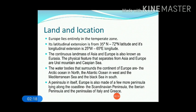Now, land and location — we will see the extension of Europe and the water bodies that surround Europe, as well as the latitudinal and longitudinal extensions. Europe lies entirely in the temperate zone. You are very much familiar with the terms temperate zone, torrid zone, and frigid zone. The temperate zone belongs to latitudes between about 40 to 65 degrees.